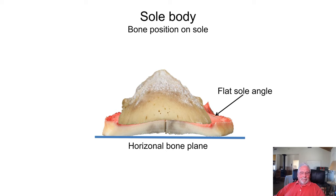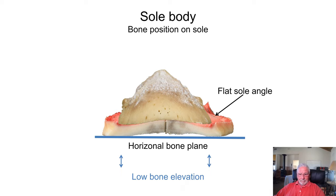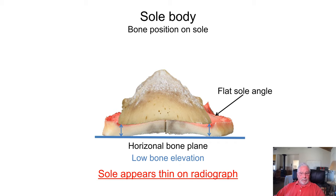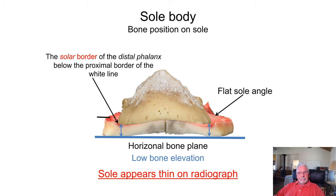Here's our horizontally planed P3 bone — remember there's a lot of tissue missing, so this bone isn't as low as the photograph shows. There's a dermis in here and some dermis can be thick, some thin. There's a lot of tissue around here actually aiding in the bone position. On a radiograph, the sole will appear thin. We go back to the solar border — the phalanx is below the proximal border of the white line. That should be one of our main goals: to prevent the bone from settling down, trying to seek the horizon of the ground. It needs the arch and the arch needs to be protected.